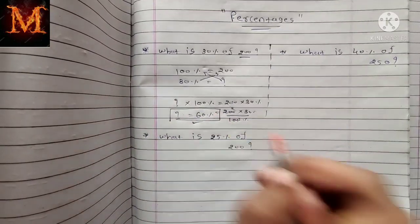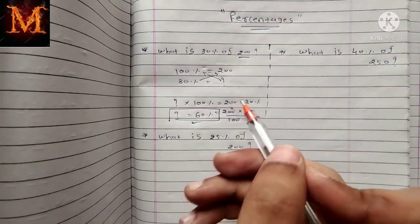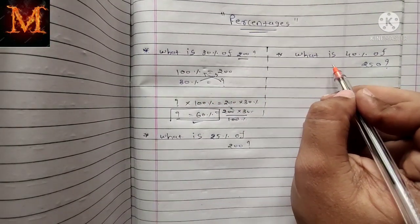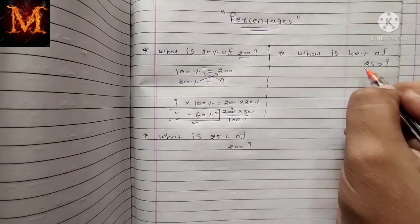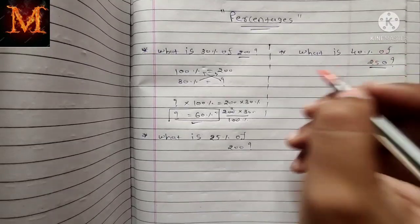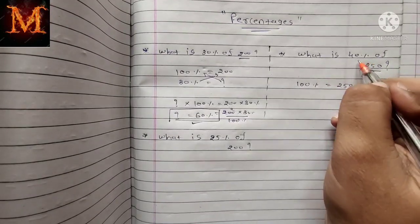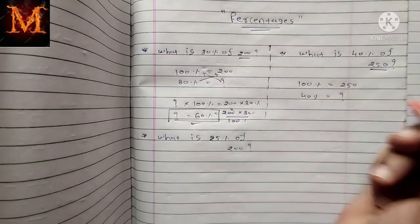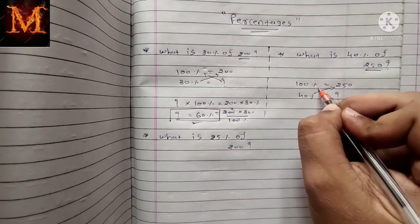So 60 is your answer. For those of you who didn't understand, let's try another question. What is 40% of 250? Again, remember this method: equivalent this 250 with 100%. So 100% is equal to 250. Then how much is 40%?